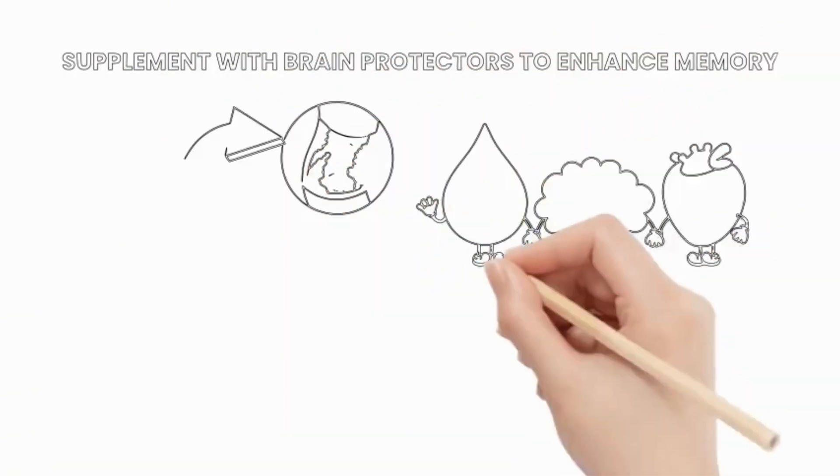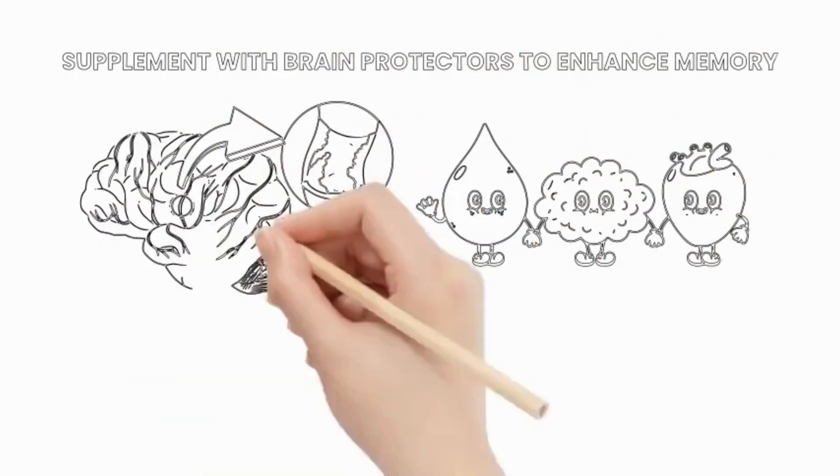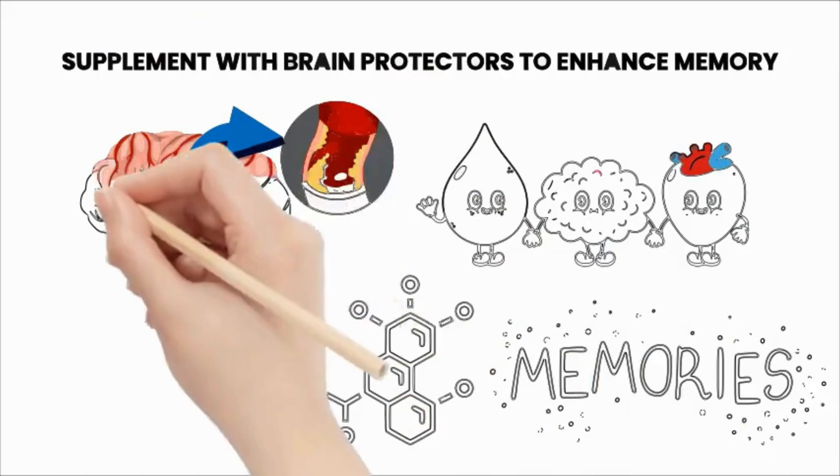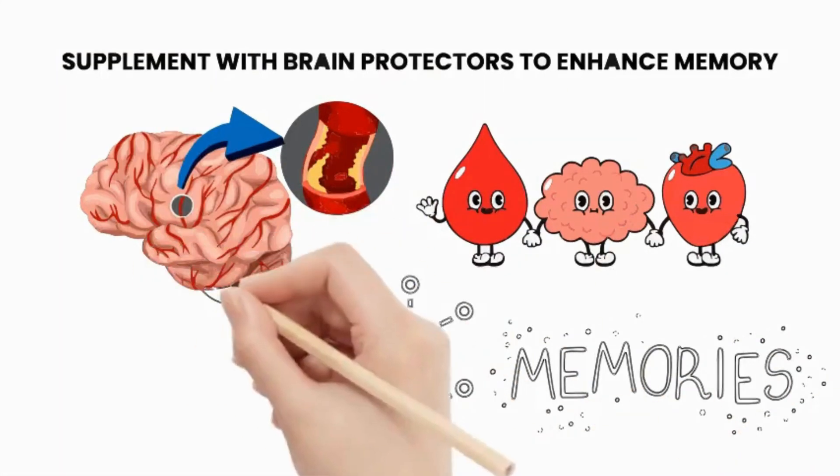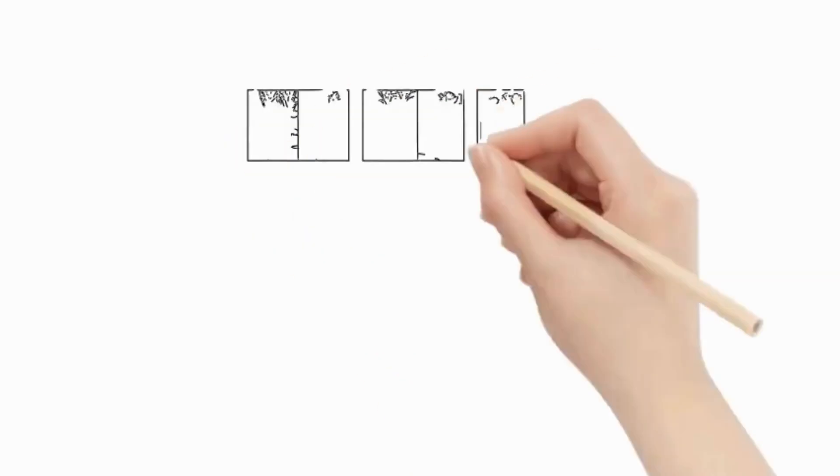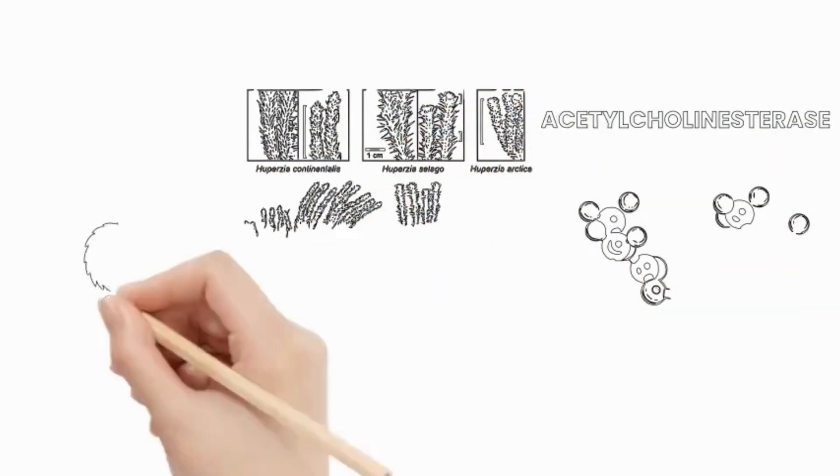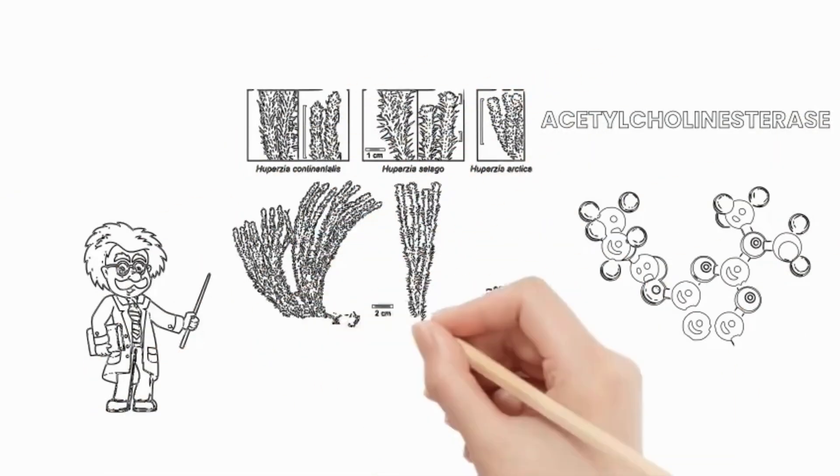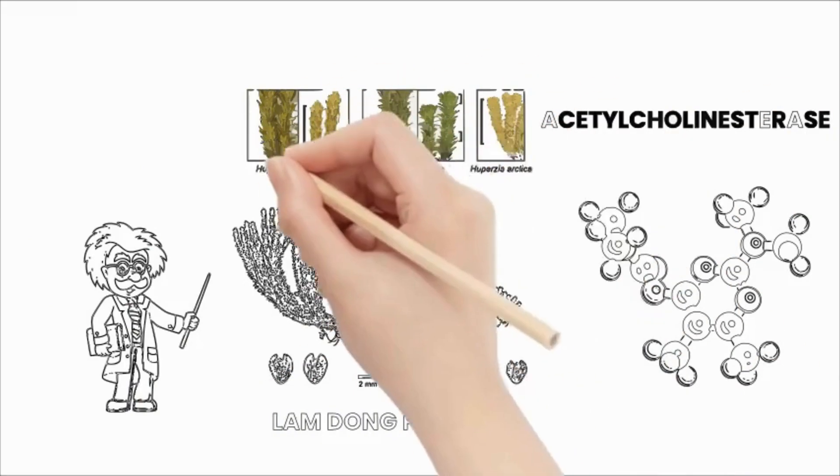Supplement with brain protectors to enhance memory: In reality, not many substances can cross the blood-brain barrier to directly affect the brain and protect it from harmful enzymes that impair memory processes. Fortunately, scientists recently discovered a valuable herb known as huperzia growing in the high mountains of Lam Dong province.